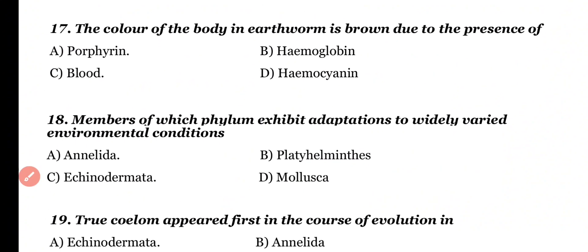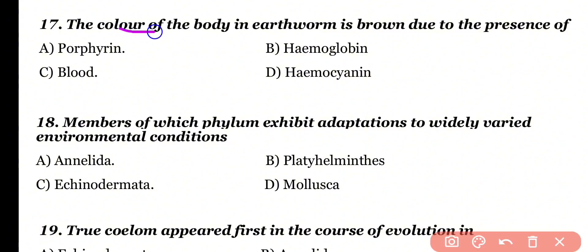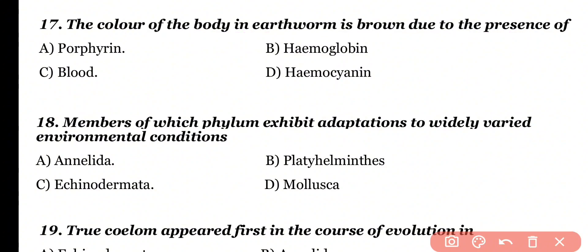Question number 17. The color of the body of earthworm is brown due to the presence of: porphyrin, hemoglobin, blood, or hemocyanin. Correct answer is option A. The porphyrin pigment is responsible for the brown body color of earthworm.